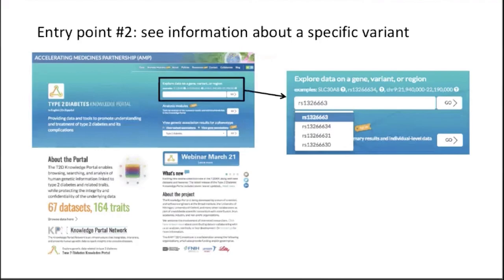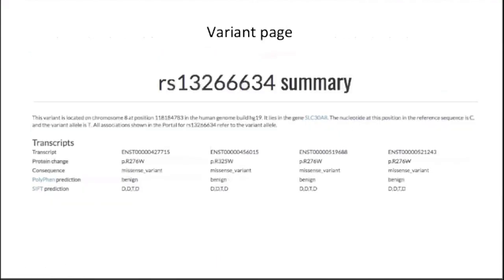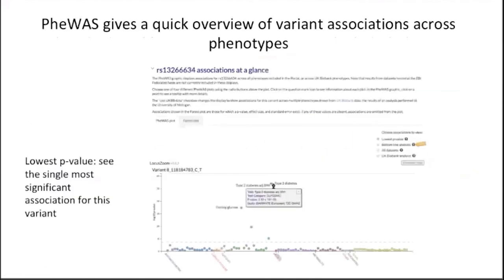Finally, if you are interested in a particular variant, you can also enter it in the search box and get to a variant page. At the top there's a summary of what the variant is, what the alleles are, and the transcripts in which it's located. Immediately below that is a section called Associations at a Glance, that gives you a great overview of what's going on with this variant. You may have come to it because it's associated with type 2 diabetes, but it could be associated with a bunch of other phenotypes, and this is a quick way to find that out.